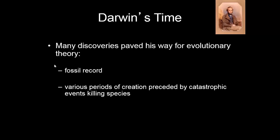Many discoveries paved the way. First was the fossil record — it's the Industrial Revolution, and people are digging up bones of dinosaurs when looking for coal and asking what they are and how they got there. These organisms aren't here anymore — what's going on? They're also finding fossils of fish way up on mountains and trying to justify how they got there. There's a lot of new evidence making people think twice about how old the world might be. Various periods of creation preceded by catastrophic events killing species is how people tried to justify this — they thought these were organisms of another era, killed by floods or horrible weather.